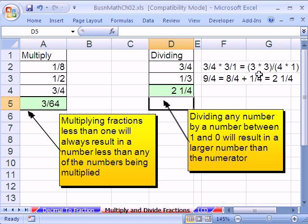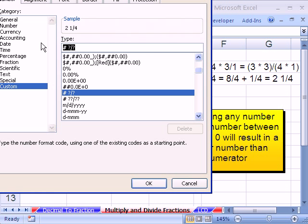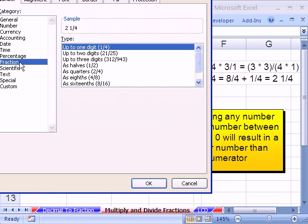So if we showed this as 9/4, it would be correct. Let's click in this cell, Control-1, and we're going to, I don't see a 9 here, so I'm going to go down to Custom, and then simply do a question mark slash 4.